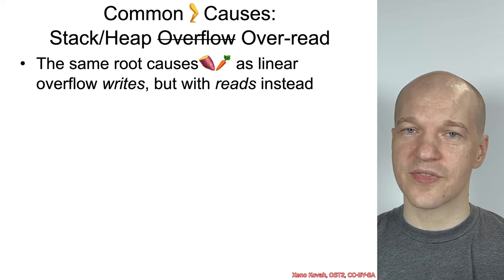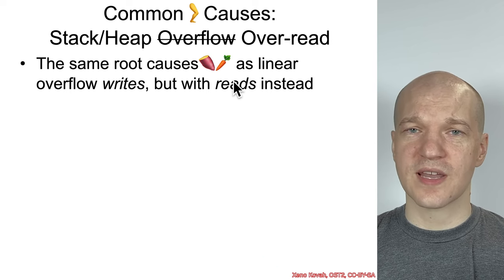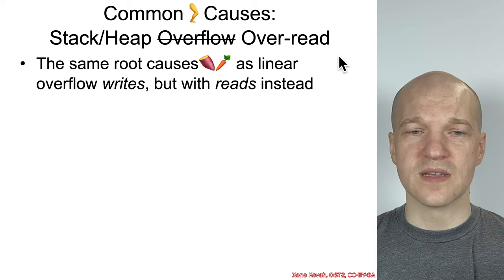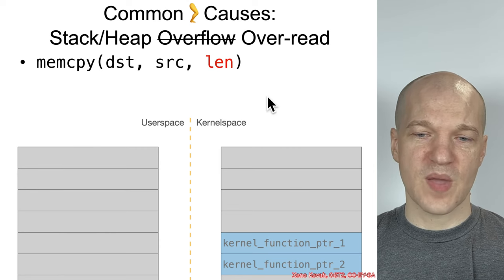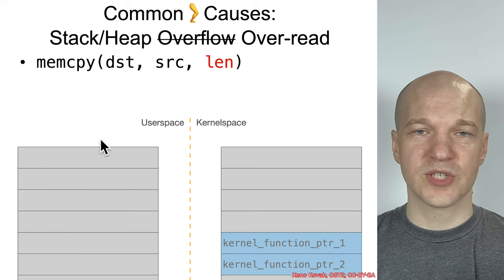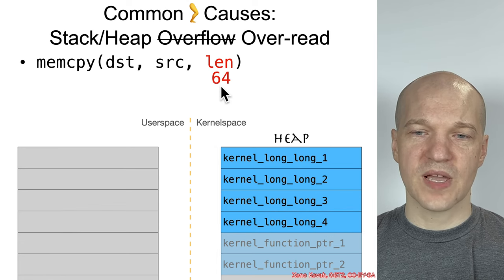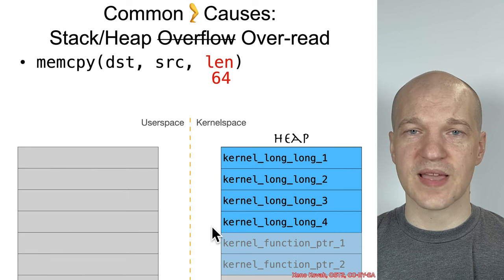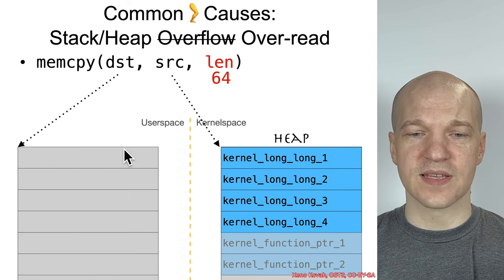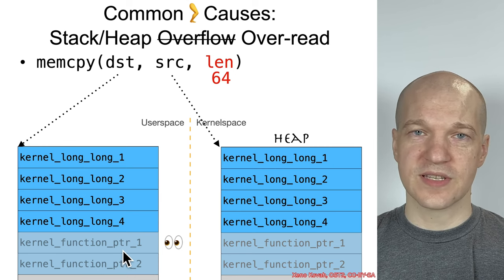Intrinsic infoleak vulnerabilities are things that actually just exist fundamentally in the code — more like the kind of stuff we've seen elsewhere in the class. For instance, you can have stack or heap not overflow but over-read. These will be caused by the same root causes as linear heap overflows and stack overflows, but instead of writes they involve reads. For example, if we had a memcpy between kernel space and user space, and it's going to memcpy from kernel space out to user space with an attacker-controlled length — although it only wanted to pass back 32 bytes, instead 64 bytes are passed back — that leads to an over-copy that could disclose information.